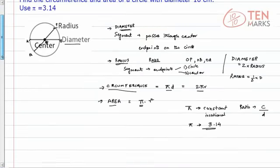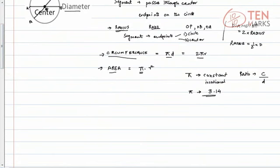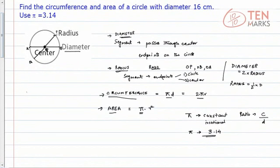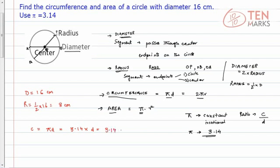Now that we know the formulas, let's calculate the circumference and area of the circle. We are given that the diameter is 16 cm, which means the radius is half of that — so that's 8 cm. The circumference C equals pi times D, which is 3.14 times 16 cm, and 3.14 times 16 equals 50.24.